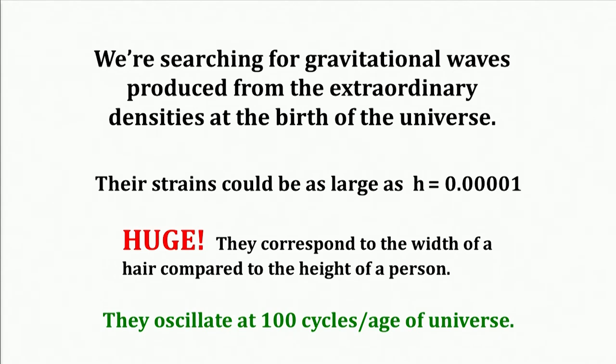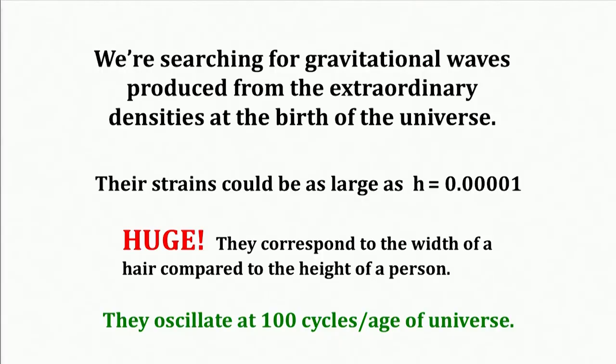What are we after? We are after gravitational waves produced from the extraordinary densities at the birth of the universe — when it's much more compact and hot. Their strains could be as large as a part in 100,000. Next to what LIGO measured, these are huge, enormous. The oscillation frequency, though, is roughly — very roughly — sort of 10 cycles in the age of the universe.